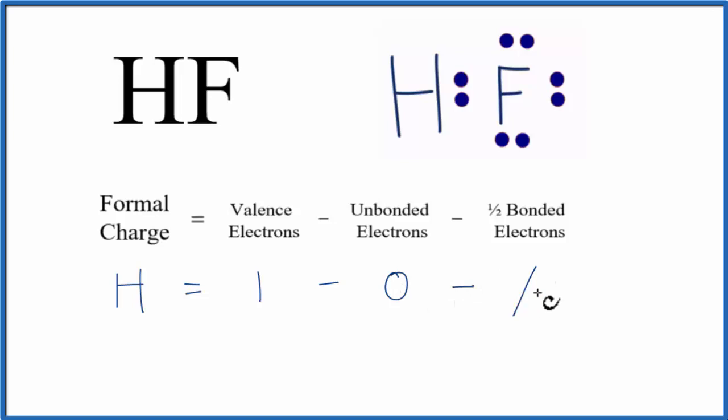Then we'll subtract one half of the bonded valence electrons. These two right here. So 2 over 2, and 1 minus 0 minus 1, that's 0. So the formal charge on the hydrogen in HF, that's 0.